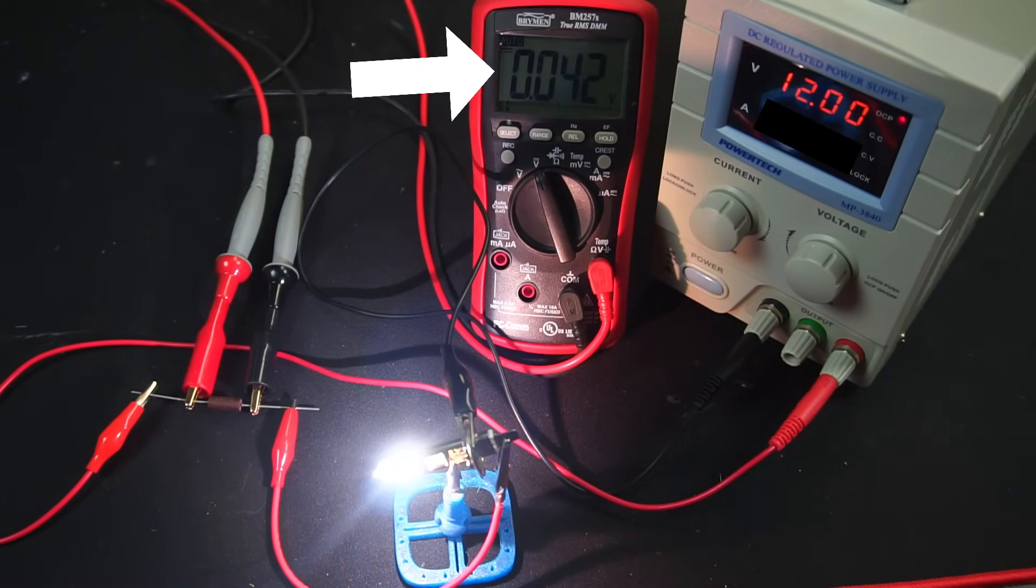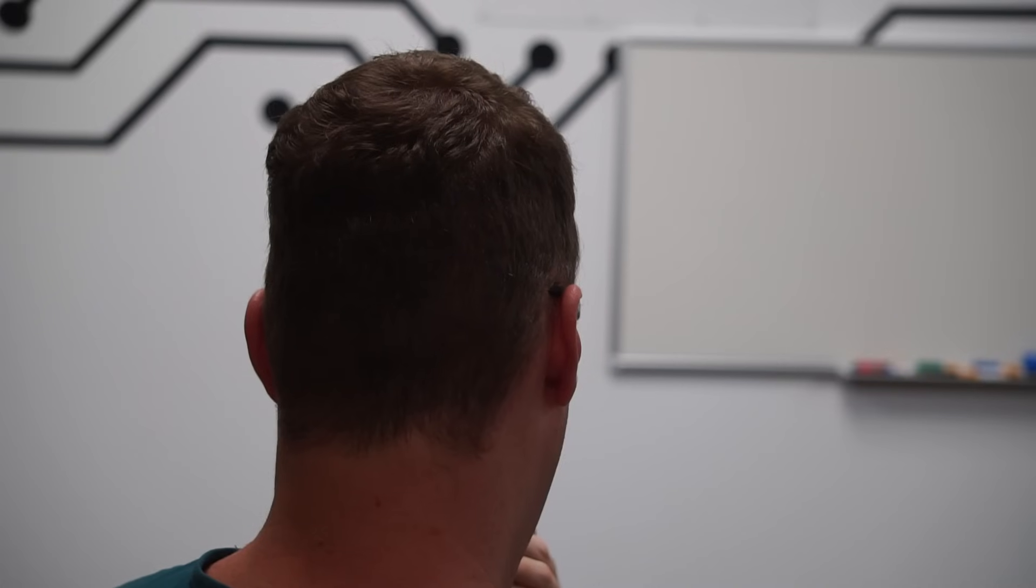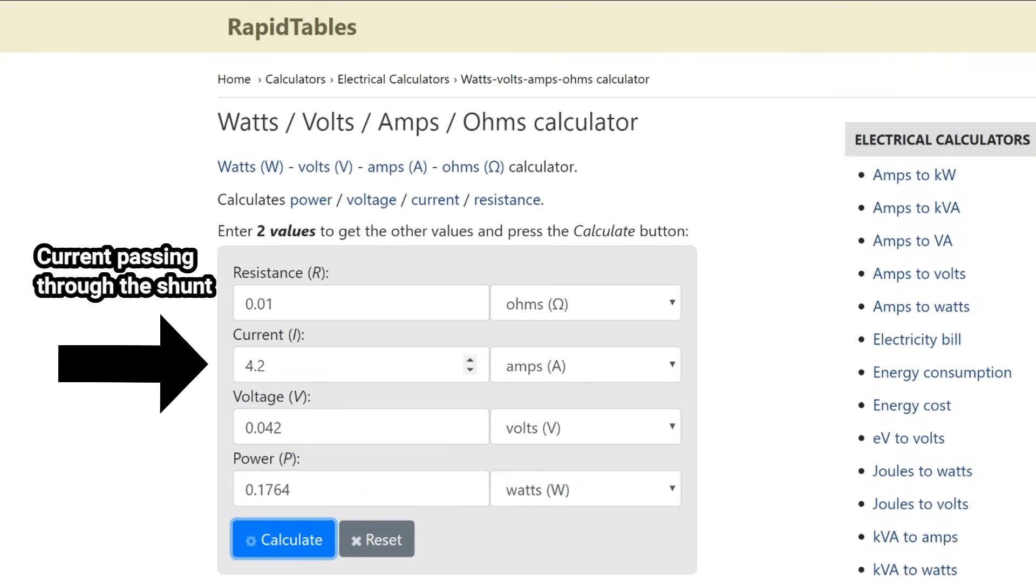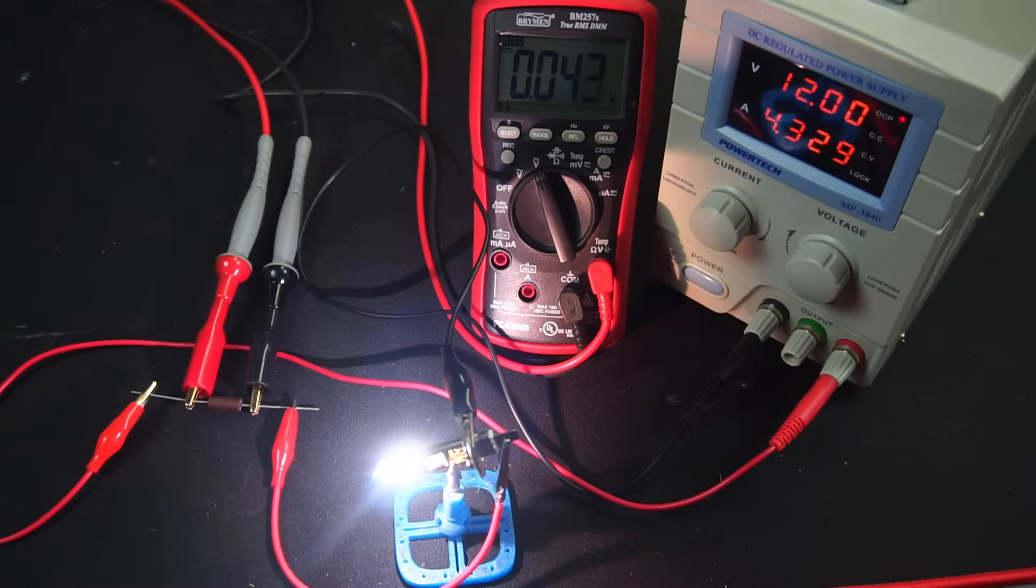I'll blank out the ammeter on my power supply so there's no cheating here. All right, time to fire it up. Okay, so my multimeter is reading 42 millivolt drop across the shunt. It's time for Ohm's law. Okay, let's go back to Ohm's law calculator to work out the current. I'll enter my shunt's value of 10 milliohms, and the voltage drop was 42 millivolts.